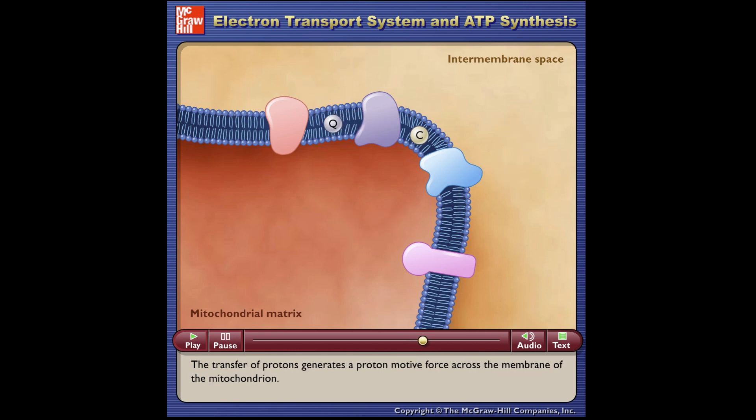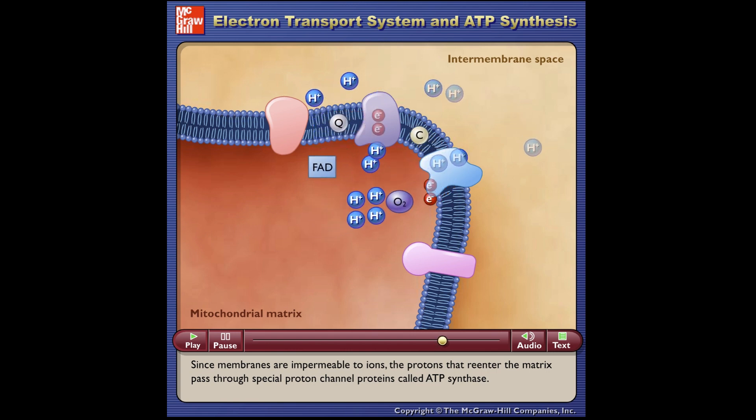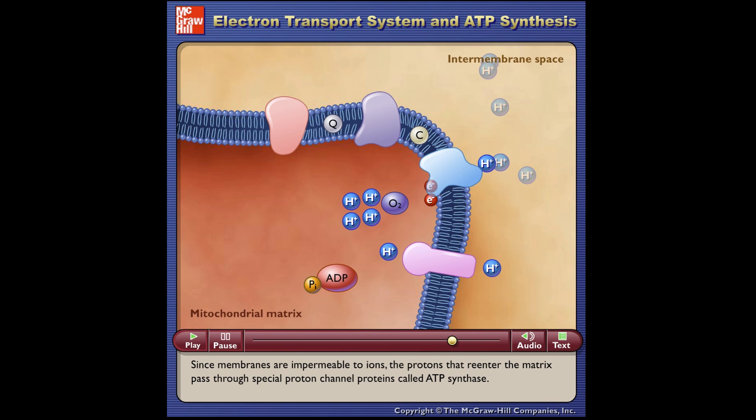The transfer of protons generates a proton motive force across the membrane of the mitochondrion. Since membranes are impermeable to ions, the protons that reenter the matrix pass through special proton channel proteins called ATP synthase.